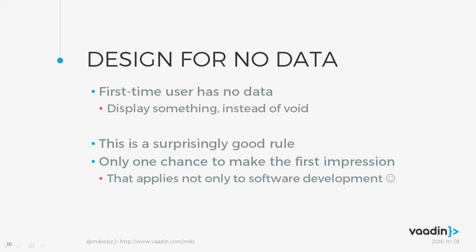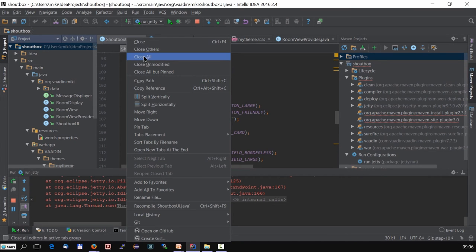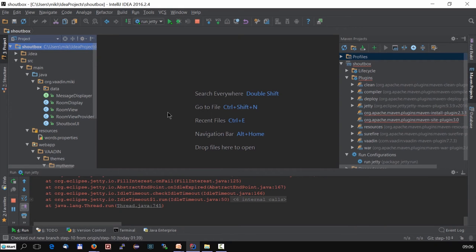Then we have design for no data — I've marked this as a surprisingly good rule, and it really is. When users start your software, what data do they have? None. In most cases it's just an empty screen because you haven't thought about putting something there. You always assume there is data because while developing you have test data to work with, but first-time users don't. You have only one chance to make the first impression. For example, in IntelliJ, if you close all projects, you don't see a blank screen — you see some help. If you're a first-time user, you at least see some pointers. This is also connected to unobtrusive help.